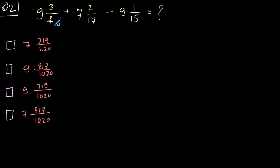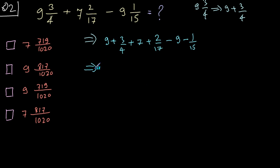Question 2, evaluate this expression. If you look at this 9 3/4, it can be written as 9 plus 3 by 4. With this, let's split all other terms and then evaluate. You can write the whole expression like, this 9 and 9 gets cancelled, so you just have 7 plus 3/4 plus 2/17 minus 1/15.